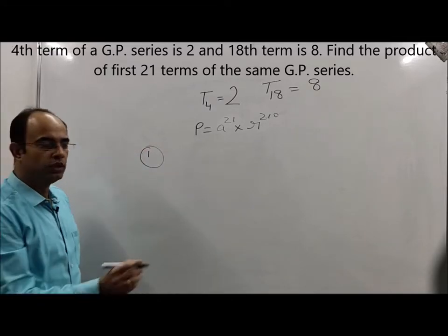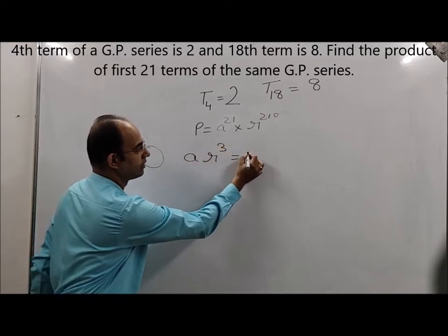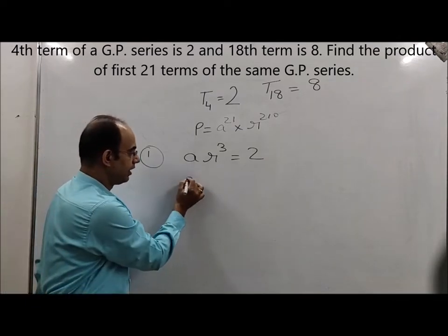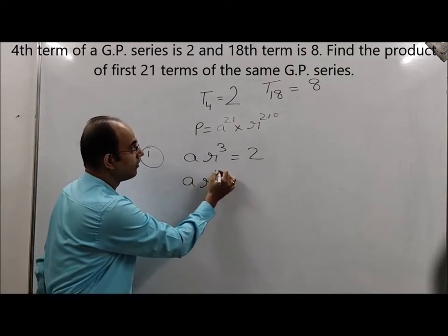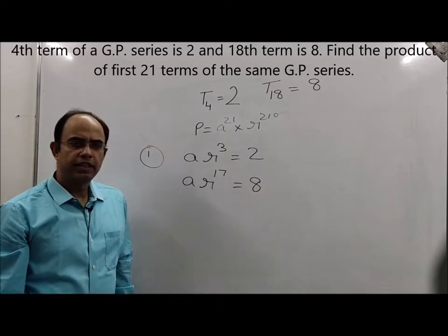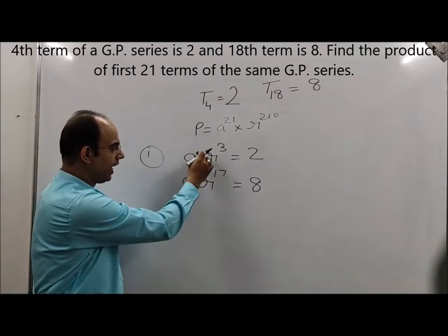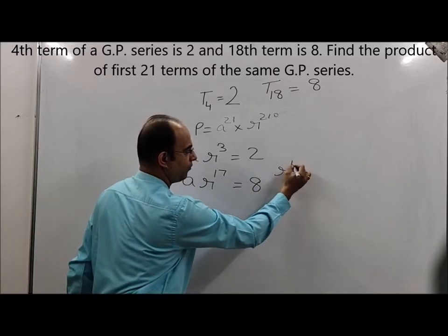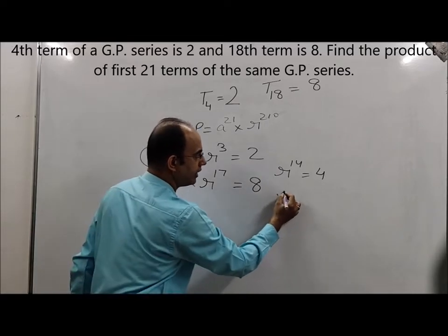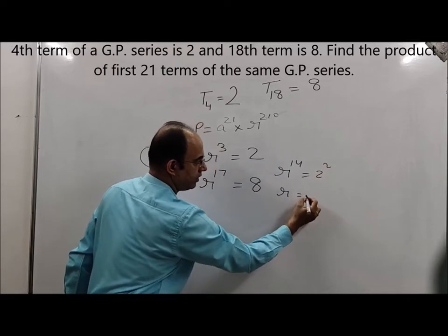Now, the first method. T₄ is given as 2, which means a·r³ = 2, and T₁₈ = 8, which means a·r¹⁷ = 8. The most common method students apply is to divide these two equations. Dividing gives r¹⁴ = 4.